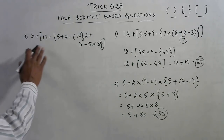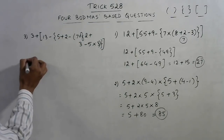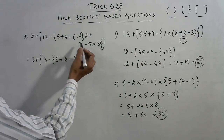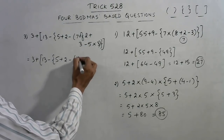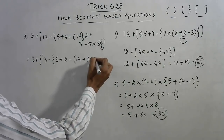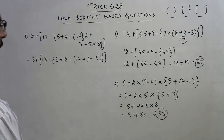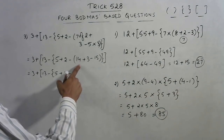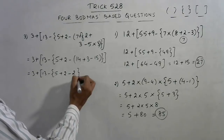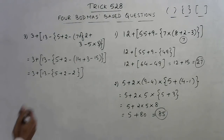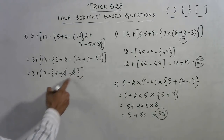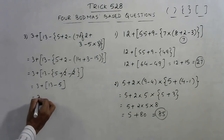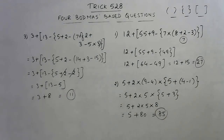The last example: 3 plus [13 minus {5 plus 2 minus (7 of 2 + 3 minus 5 times 3)}]. Solve the small bracket: 7 of 2 means 7 times 2 is 14, and 5 times 3 is 15. So inside: 14 plus 3 is 17, minus 15 is 2. The small bracket result is 2. In the curly bracket, plus 2 and minus 2 cancel, leaving only 5. So 3 plus [13 minus 5] is 3 plus 8, giving the answer 11.